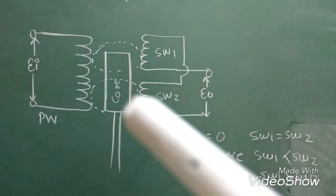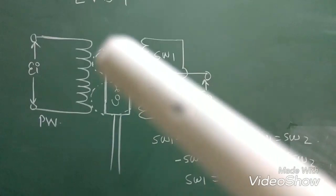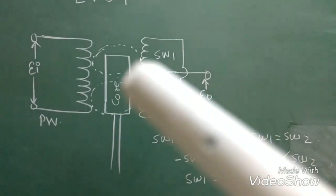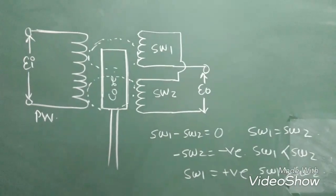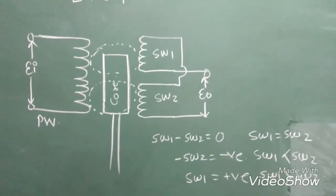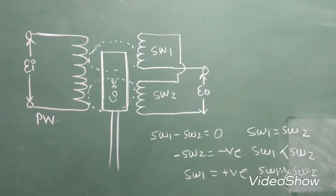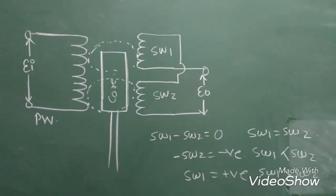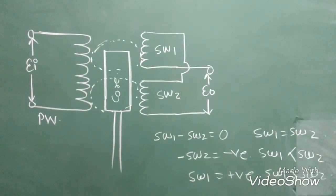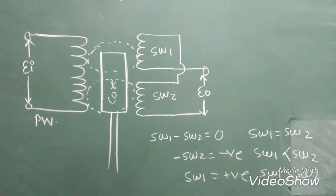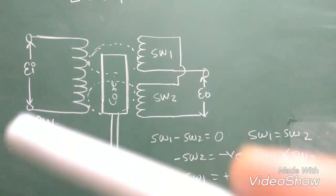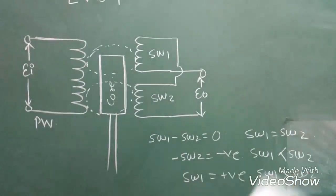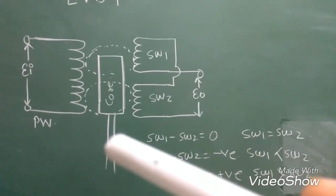Whenever the voltage is supplied across the winding, the EMF must be induced into this system. That is the basic principle of ferromagnetic material. The core moves upward because LVDT is generally used to measure displacement. The lower end of this core is connected to the measurement — the system under measurement.